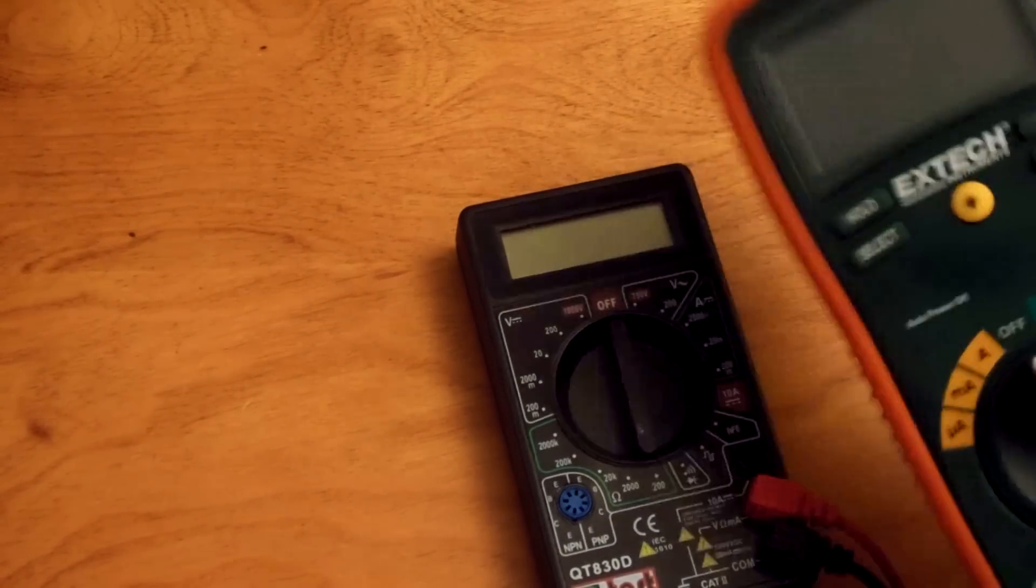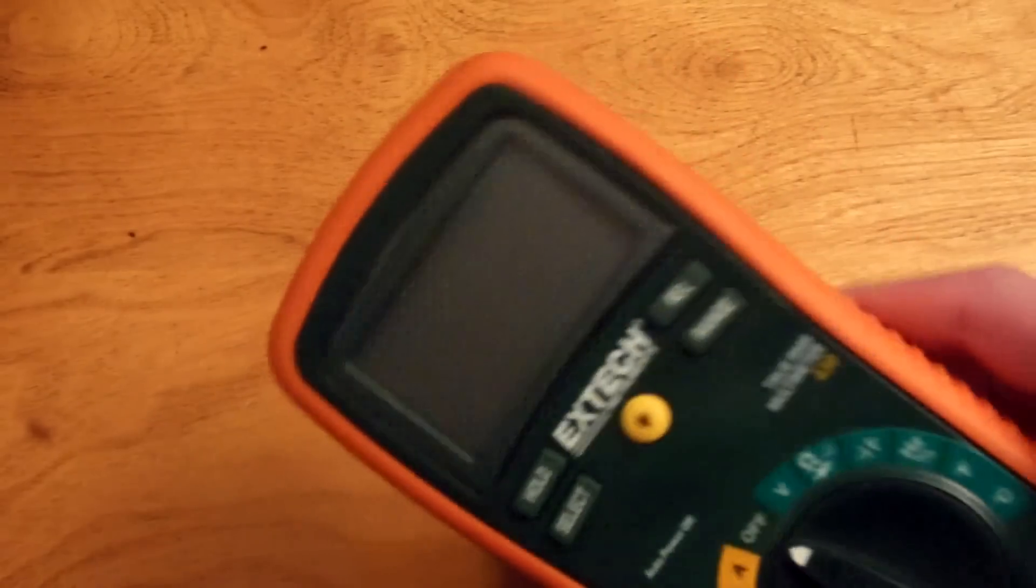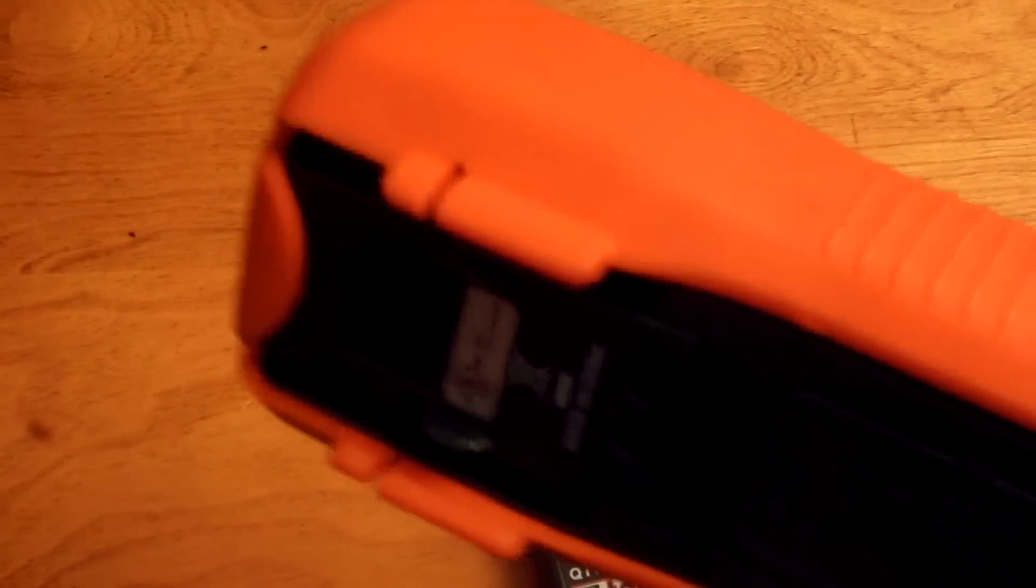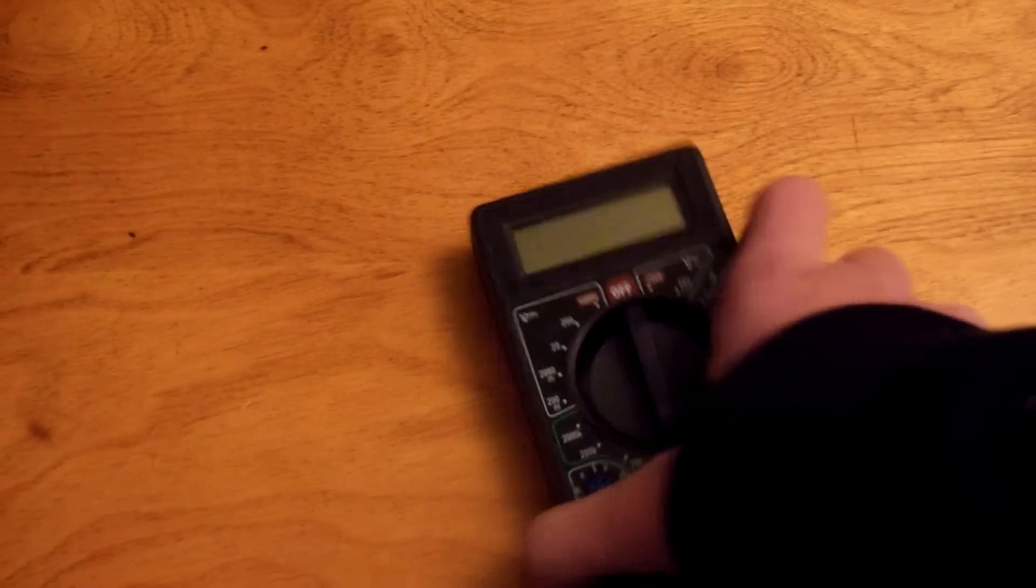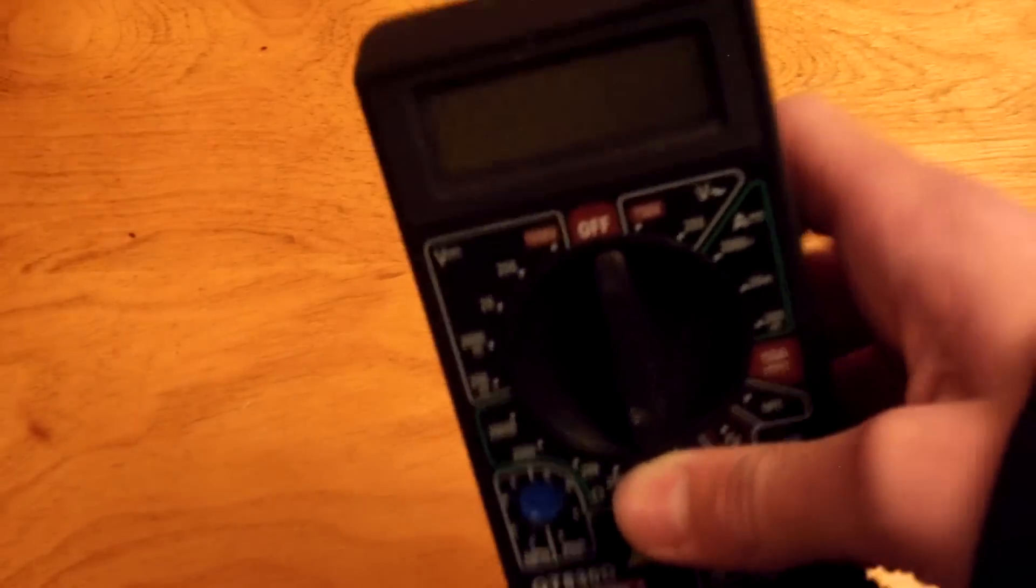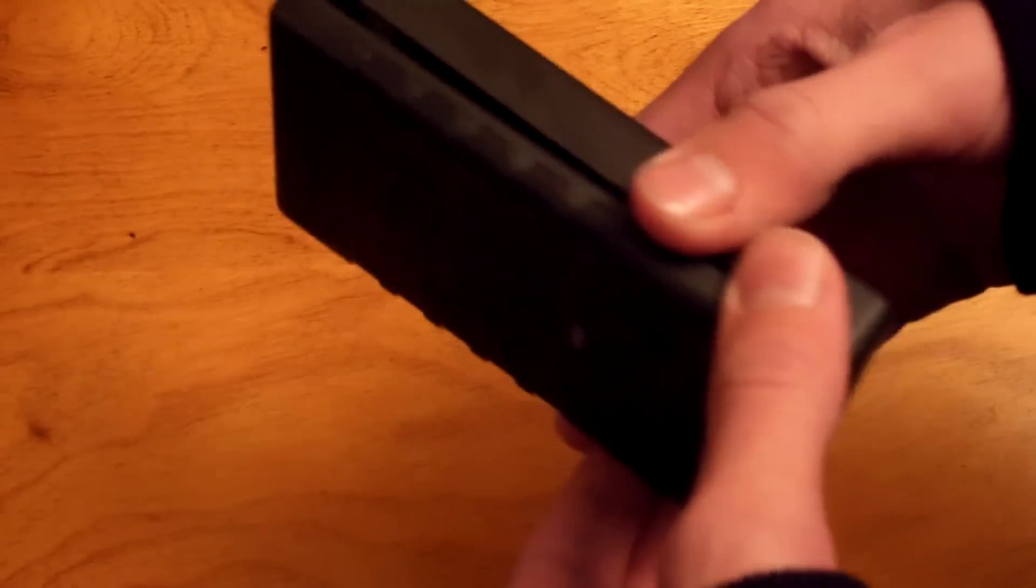Now I would not recommend trying to calibrate a meter like this simply because it's a lot more difficult. There's many more potentiometers on the inside to try to figure out. Plus, this one I think I got for free as an MPJA promotion. So if it breaks, I'm not really losing anything. I'm losing a meter that would normally cost $5. So I already pulled the screws out.